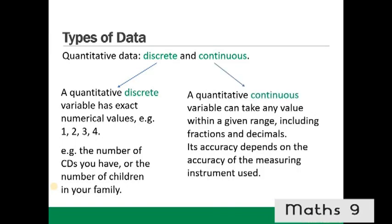A quantitative continuous variable can take any value within a given range, including fractions and decimals. Its accuracy depends on the accuracy of the measuring instrument used. For example, length, weight or time.